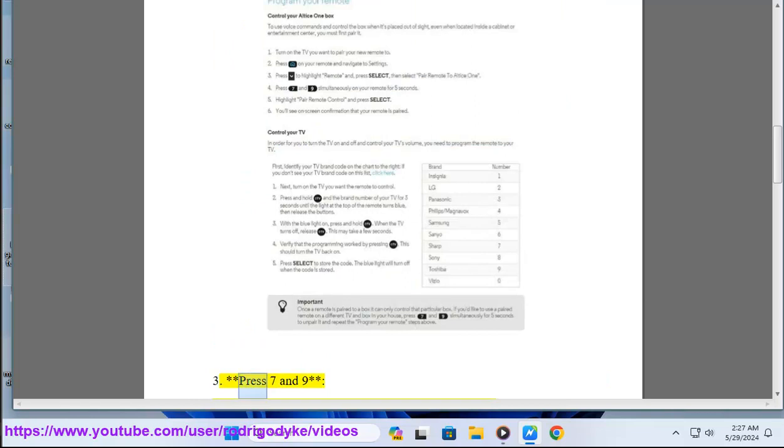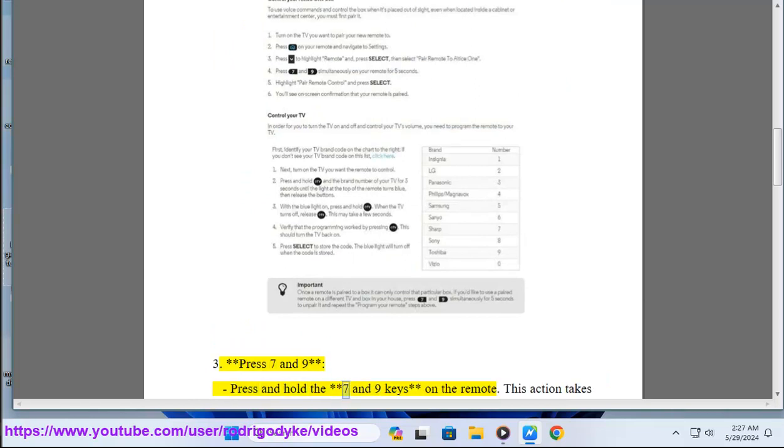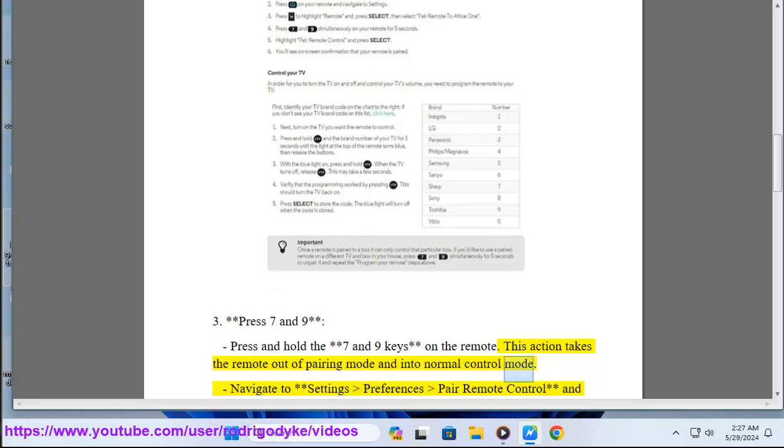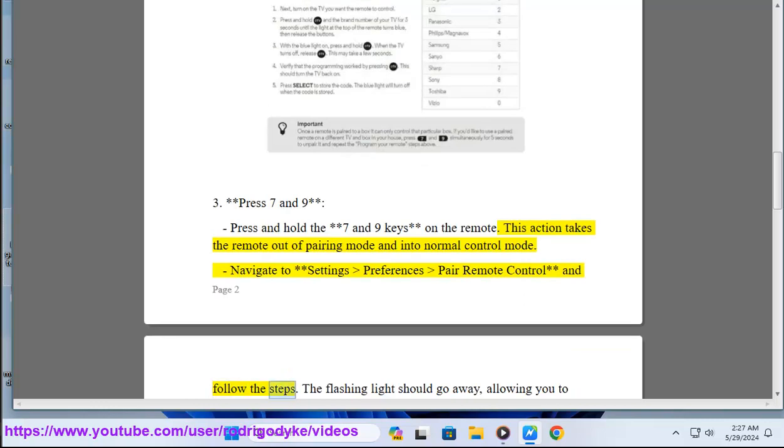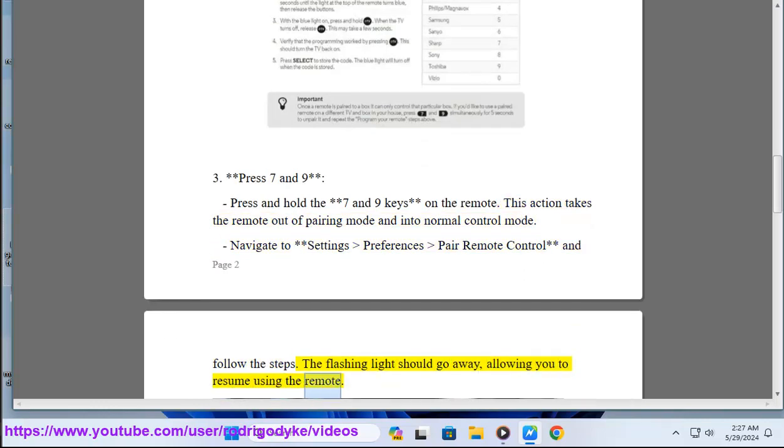3. Press 7 and 9: Press and hold the 7 and 9 keys on the remote. This action takes the remote out of pairing mode and into normal control mode. Navigate to Settings > Preferences > Pair Remote Control and follow the steps. The flashing light should go away, allowing you to resume using the remote.